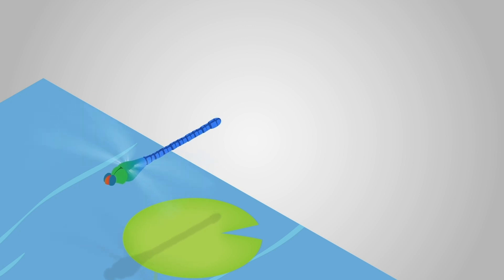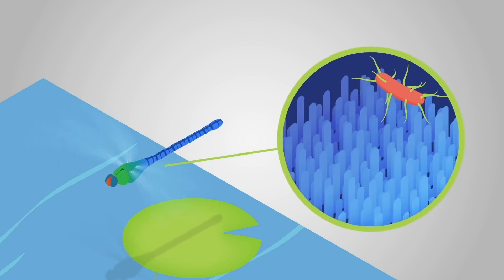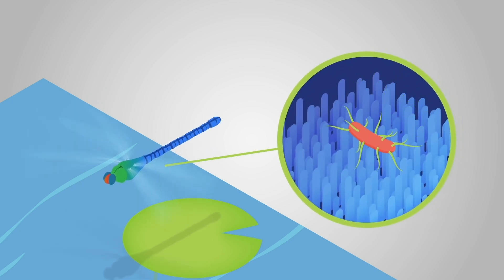Finally, some animals and plants have microscopic patterns and structures on their outside surfaces. One example is the surface of dragonfly wings. These patterns make it more difficult for microbes to stick to the surface and to form biofilms.